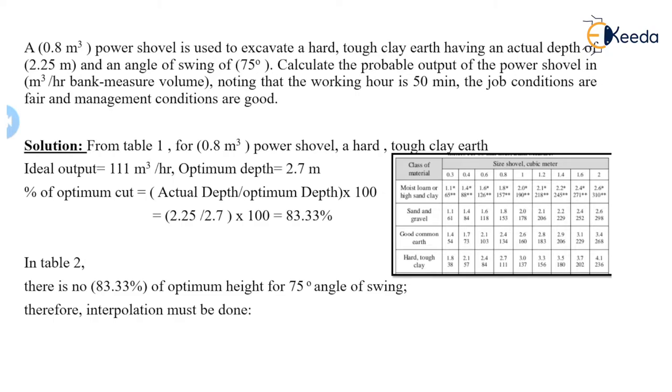Now you can see what is given: the capacity of the power shovel is given, we are excavating a hard tough clay earth, actual depth is given as 2.25 m, angle of swing is given as 75 degrees. Here an extra value is given compared to the previous problem: the working hour of 50 minutes. And again, extra information is given about the job condition and the management conditions.